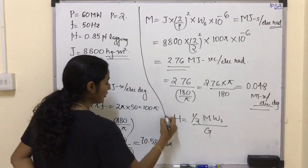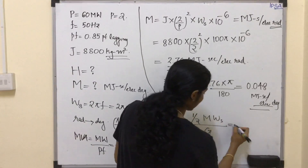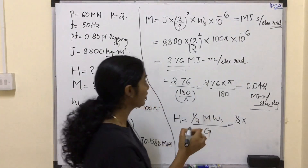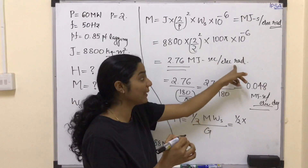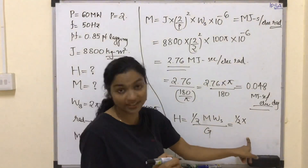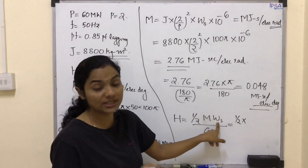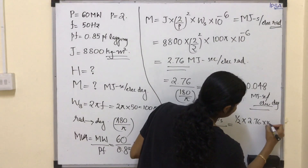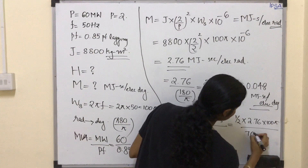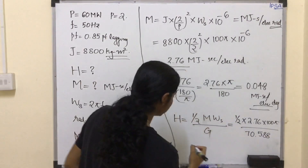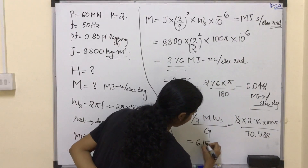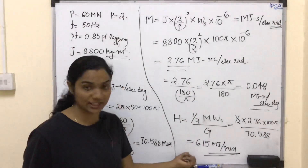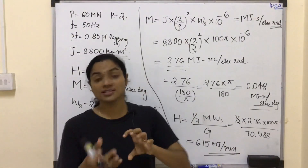Substituting the values: H equals half multiplied by M (2.76 MJ·s per electrical radian) multiplied by ωs (100π), divided by G (70.588 MVA). This gives H equal to 6.15 MJ per MVA.